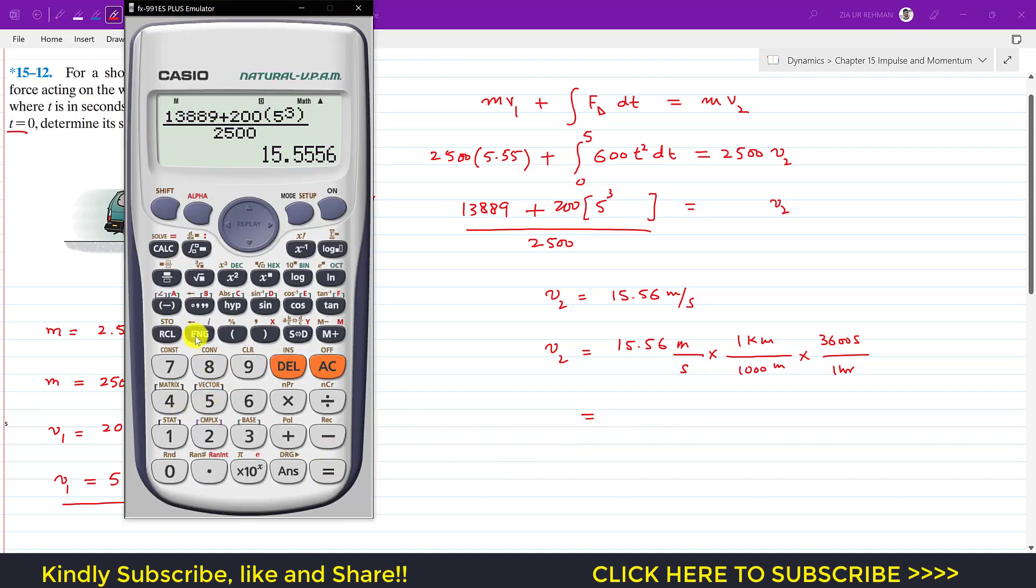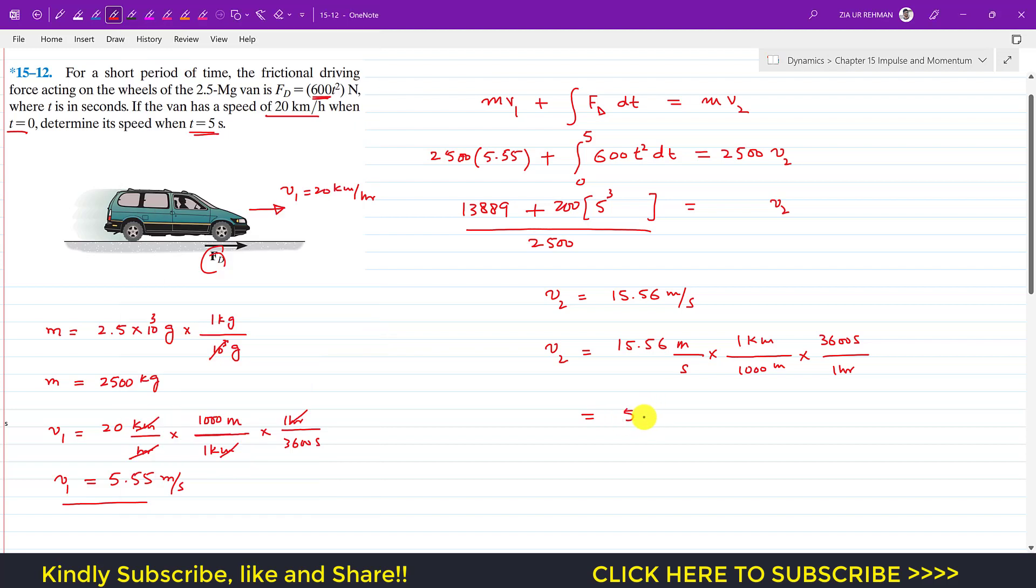So 15.56 multiplied by 3600 divided by 1000 gives us 56.02. So velocity v₂ is 56.02 km/h. This is after 5 seconds.